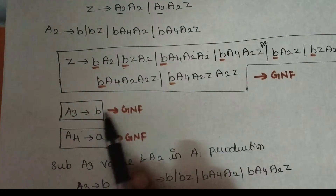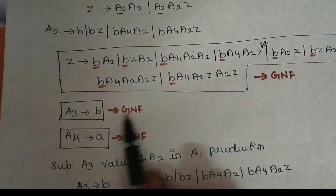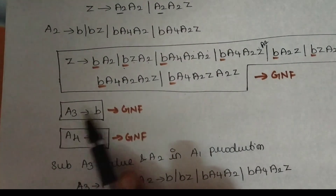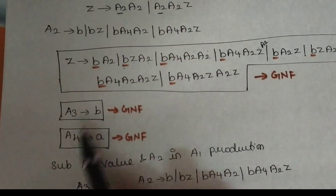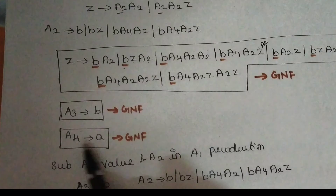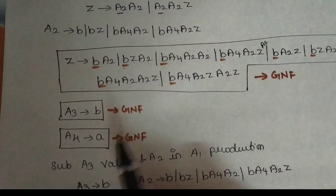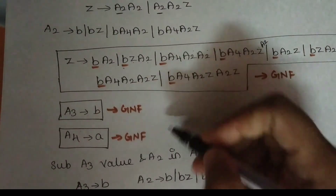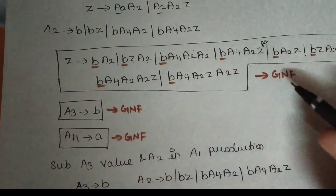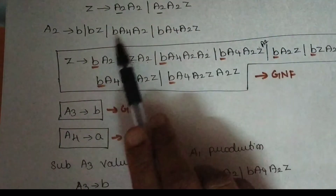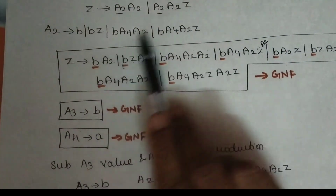A3 goes to B is already Greibach Normal Form — non-terminal goes to terminal. A4 also has non-terminal goes to terminal. So A3, A4, A2 is already Greibach Normal Form.